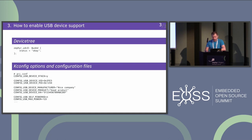We have two device stacks now in Zephyr: the current one and the new experimental one. This example is for the current one, and it's configured using Kconfig options. You have to enable the device stack, and the vendor IDs, product IDs values, and also the device strings configuration are done using Kconfig. It's fixed — you can change it at runtime.